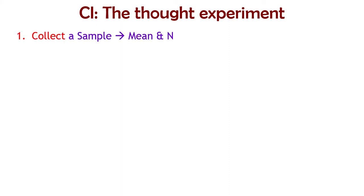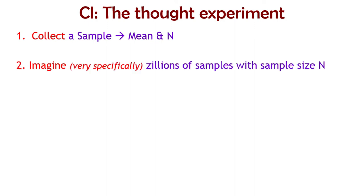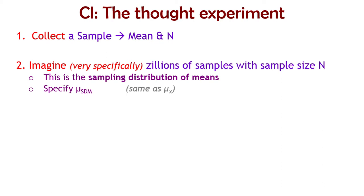The thought experiment we conduct when we make confidence intervals: we actually collect a sample, calculate the mean, standard deviation, sample size, and all that. Then we start the thought experiment. We imagine, very specifically, zillions of samples with the same sample size as our observed sample — that's the sampling distribution of means, as long as we calculate a mean from each of those samples. So if our sample was 25 individuals, we imagine bazillions of samples of 25 individuals from the same sampling distribution, calculating a mean from each, and that distribution of all the means is the sampling distribution of the means.